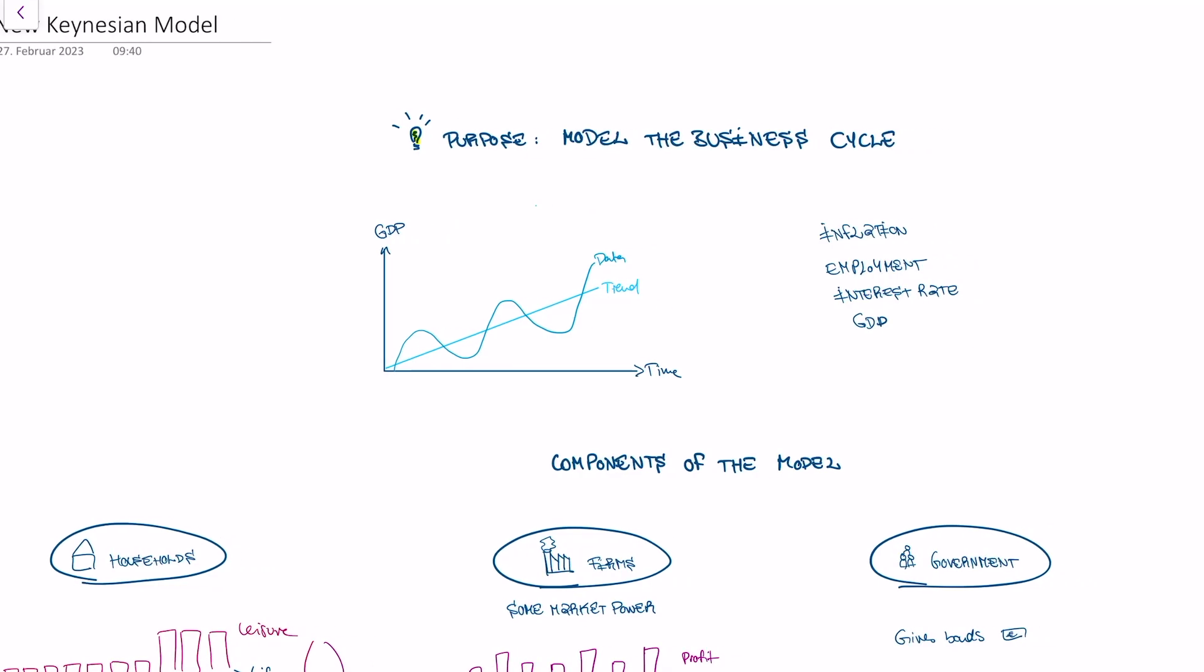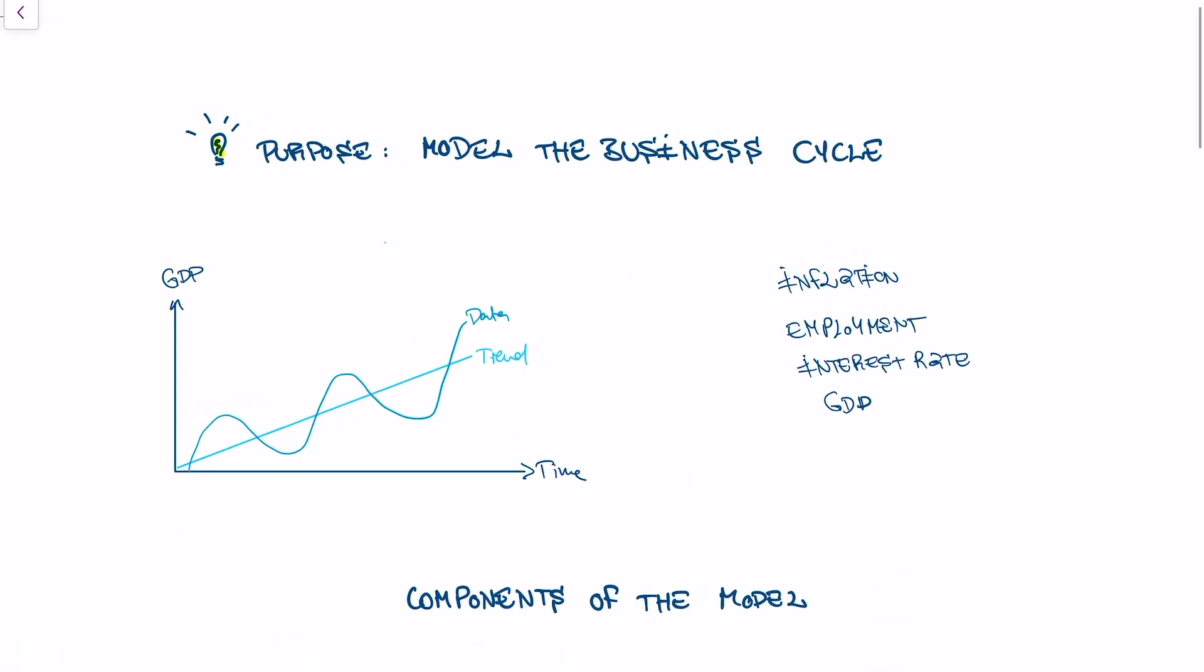The New Keynesian model is one of the most important models in economics because it's the model that central banks use to make their decisions. This is a little intro into this model. Let's try to understand why we actually have a New Keynesian model and what we're trying to achieve.